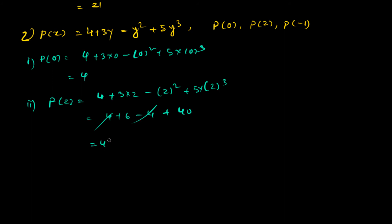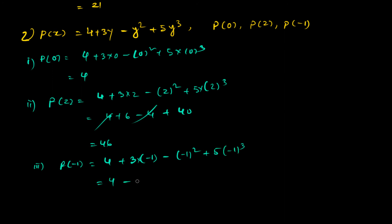For p(-1), we replace y with minus 1: 4 plus 3 times (-1) minus (-1) squared plus 5 times (-1) cubed. That gives 4 minus 3 minus 1 minus 5. The answer is minus 5.